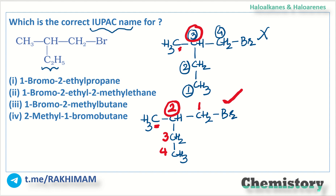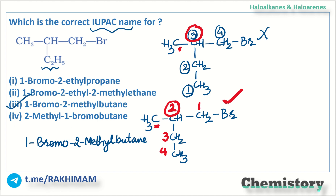Is the thing clear? So what will be the IUPAC naming of this compound, given that the parent chain has 4 carbon atoms? I will write: at position 1 there is bromo — 1-bromo; at position 2 there is a methyl group — 2-methyl; and it will be butane because the parent chain has 4 carbon atoms. So: 1-bromo-2-methylbutane. Therefore, option C, 1-bromo-2-methylbutane, is our correct answer.